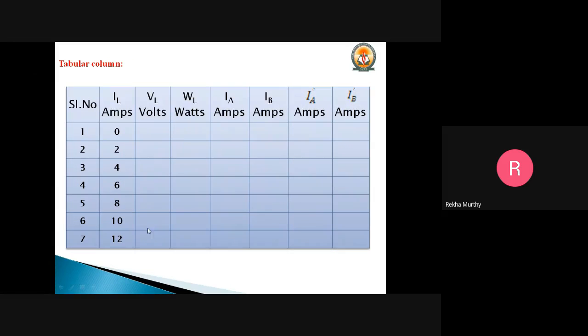This will be with different ratings as I told you, 2 amperes we are going to vary, then 4 amperes. This is all the variation with respect to the resistive load bank and it should not exceed 12 amperes. And this is the respective voltage, wattmeter rating, IA, IB, and IA prime and IB prime values which will be taken out.